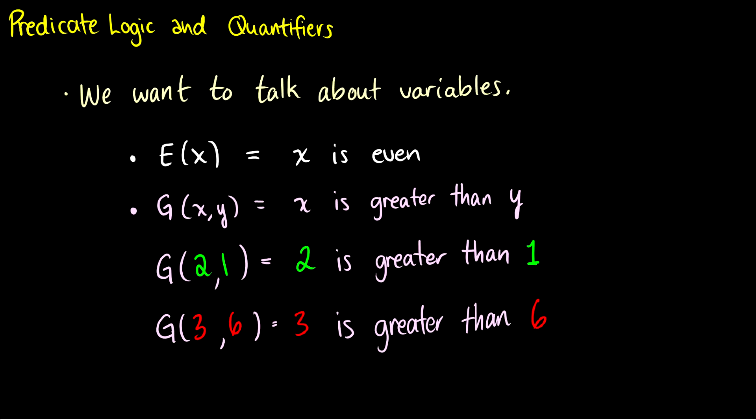In this video we'll talk about predicate logic, quantifiers, and negation. So what is predicate logic for? We want to talk about variables. Before we couldn't have a statement like x is even and then just plug something in for x. That wasn't possible in propositional logic. But in predicate logic it's now possible because our predicates also have terms. So a predicate looks like E(x), and this is the proposition or predicate 'x is even.' Another example would be a two-place predicate G(x,y) which could mean something like 'x is greater than y.'